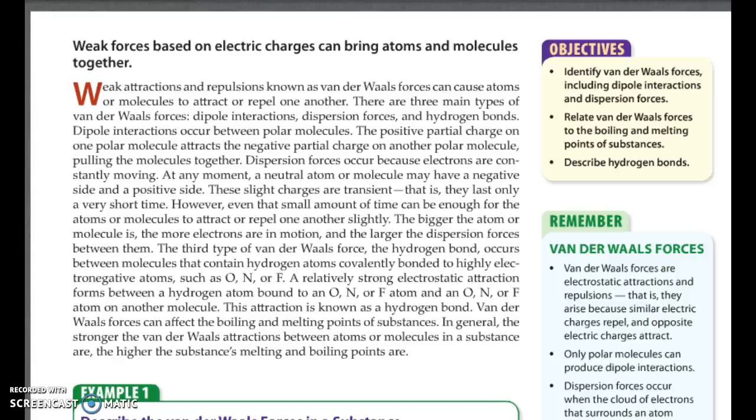Dispersion forces occur because electrons are constantly moving. At any single moment, a neutral atom or molecule may have a negative side and a positive side. These slight charges are transient. That is, they last for a very short time. So a split second. However, even that small amount of time can be enough for the atoms or molecules to attract or repel one another slightly. The bigger the atom or molecule is, the more electrons that are in motion and the larger the dispersion forces between them. So remember, that one was like the race car. The fact that the electrons are going around and around, and they all might be on this side, creating a negative end and a positive end, and then the domino effect.